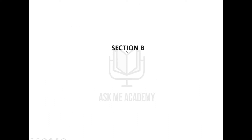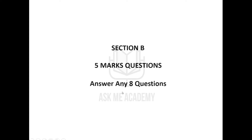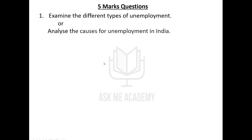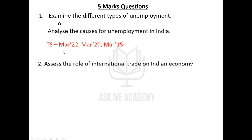Now coming to Section B. Section B has five-mark questions and you have to answer any eight of the given questions. The most important question here is: Examine the different types of unemployment — also rephrased as: Analyze the causes for unemployment in India. This has been asked three times.